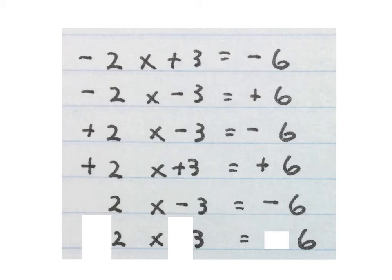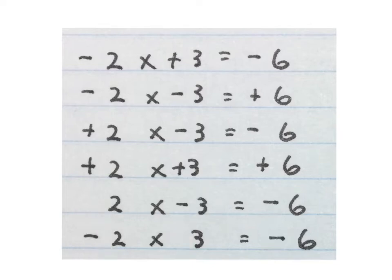If they don't put a sign in front of a number we know that it's going to be a plus, so a plus times a minus will give us a minus because they are different. The last answer is also a minus because we have a minus 2 times a plus 3 equals a minus 6. The signs are different.